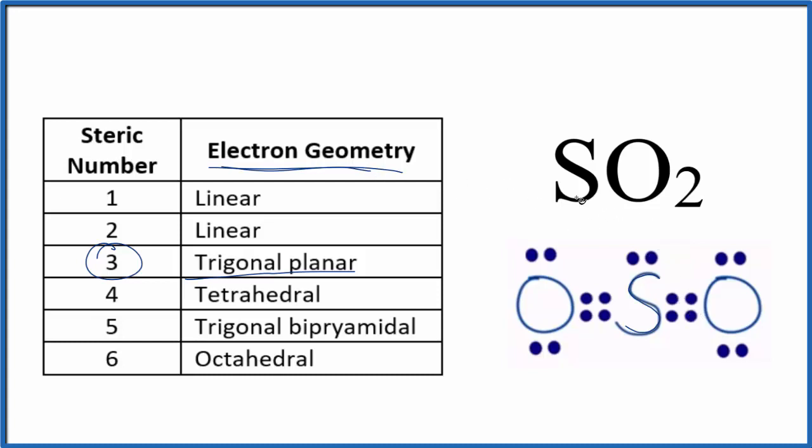Either way, the electron geometry for SO2, sulfur dioxide, is trigonal planar. This is Dr. B. Thanks for watching.